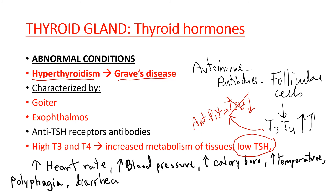Other signs and symptoms of hyperthyroidism include goiter. Because of the constant stimulation of follicular cells, the thyroid gland will continue to increase in mass and grow, producing goiter. High levels of T3 and T4 increase metabolism of tissues across the body, which means increased heart rate, increased blood pressure, and increased calorie burnout — the calorogenic effect — which also causes an increase in temperature, polyphagia (unsatiated appetite), and diarrhea.